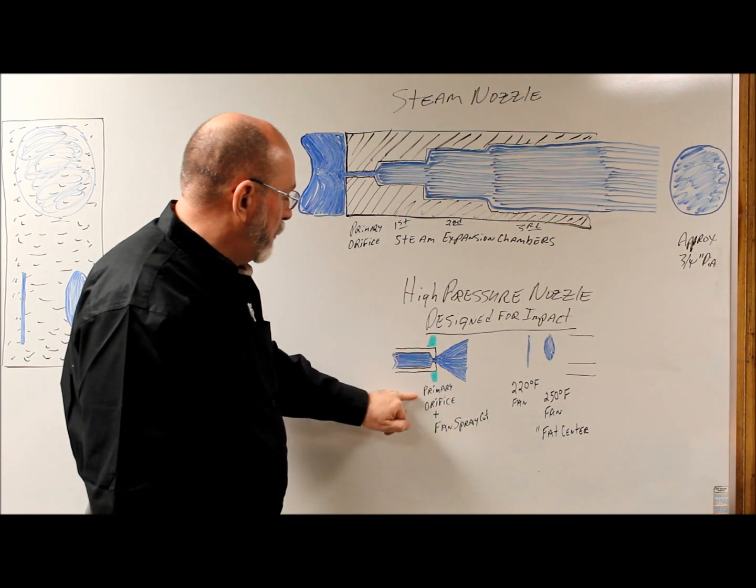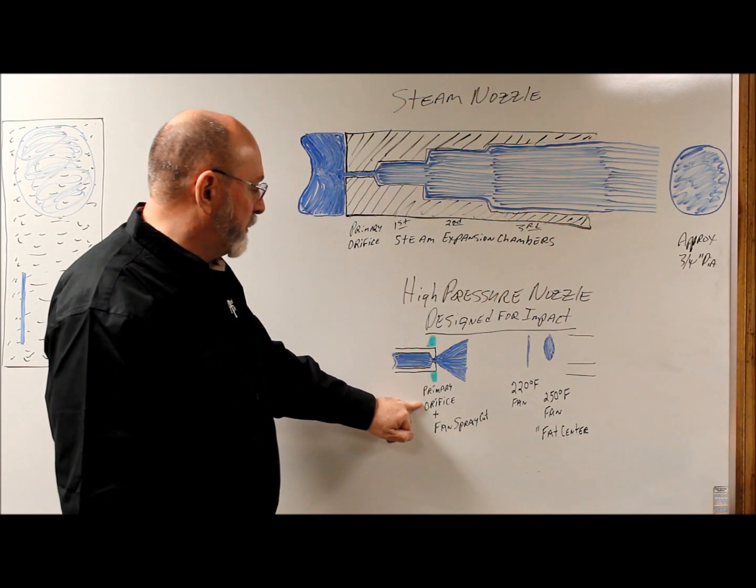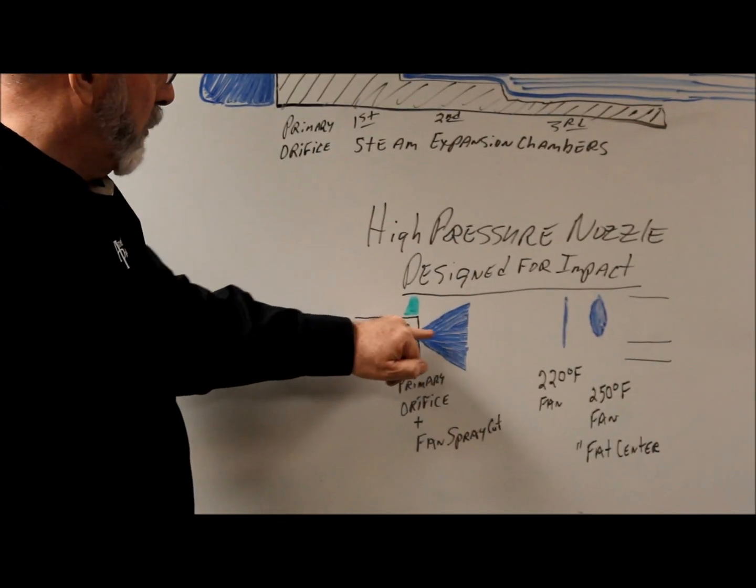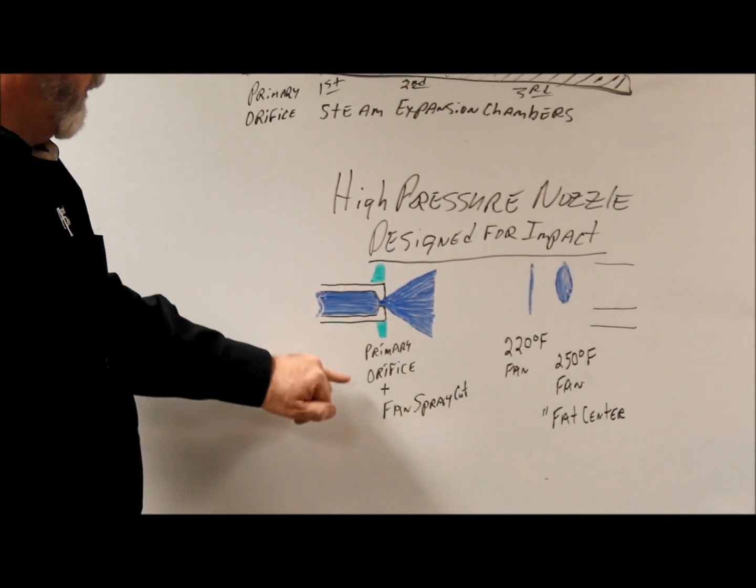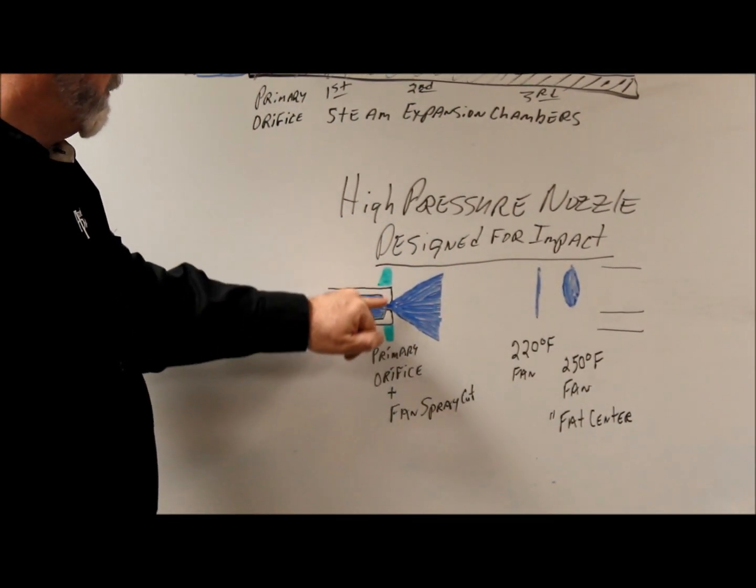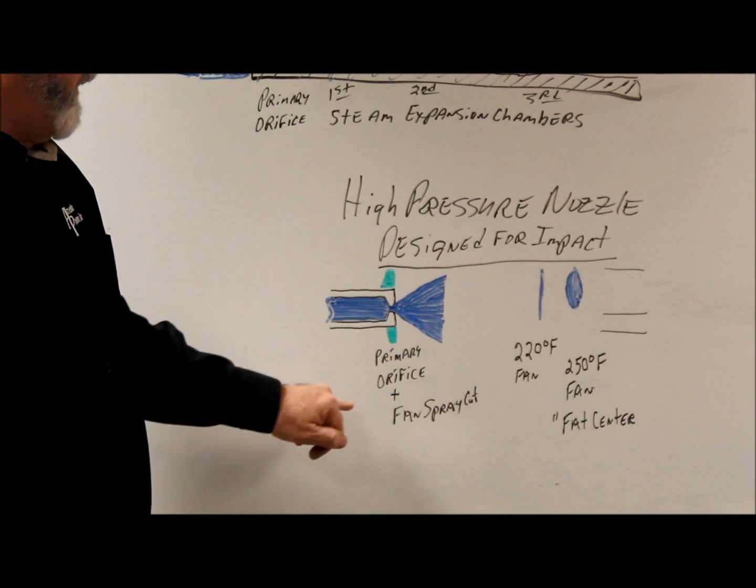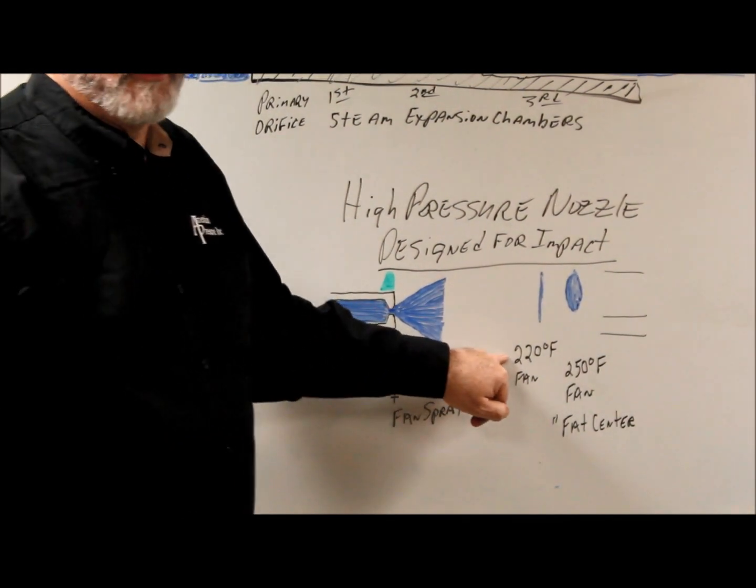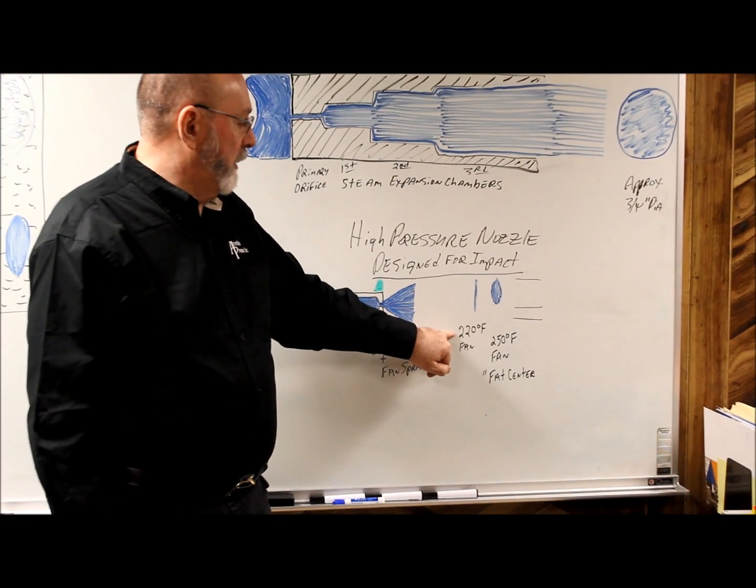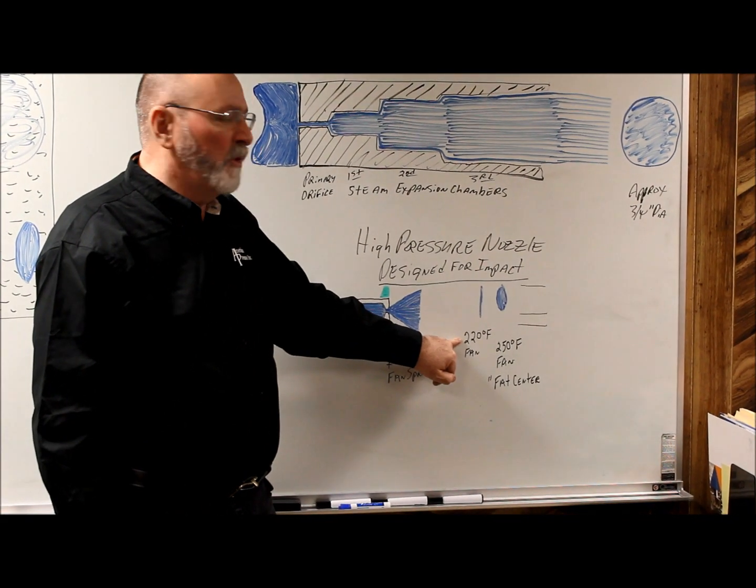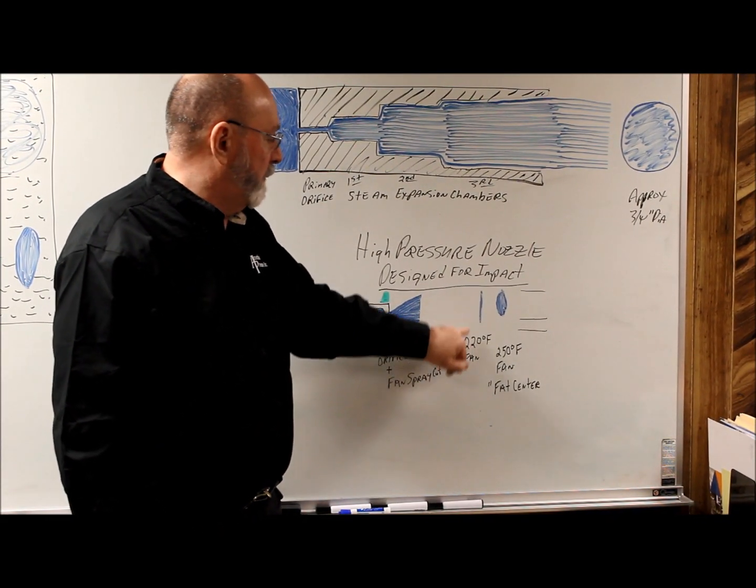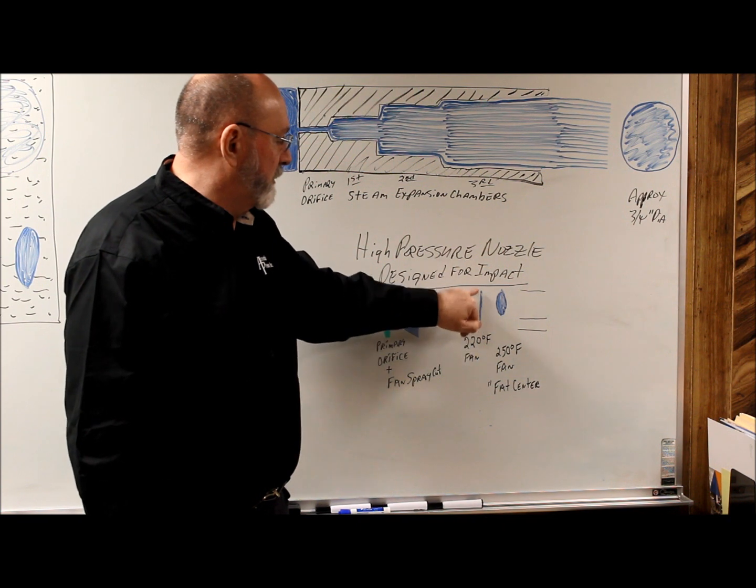The water flow still comes in and you will have what we call a primary orifice. And if it was just a zero degree it would just be a straight stream out. But we also have the fan spray here. So with that, when you start building up the temperature in the machine and you get to around 220 degrees, maybe 225, the fan is still pretty consistent, straight cut like a chisel type.